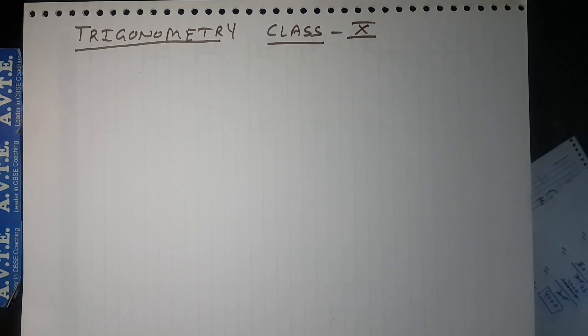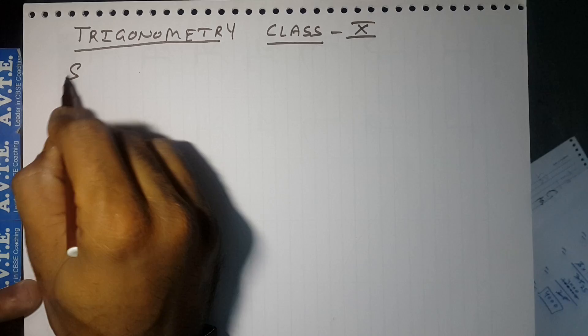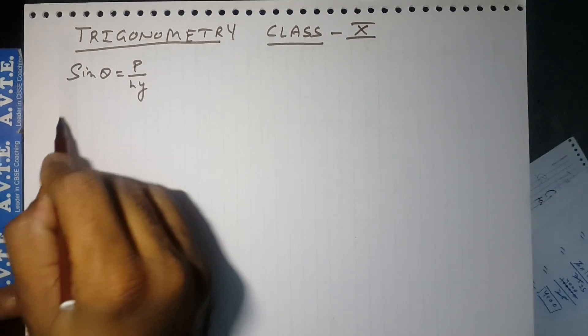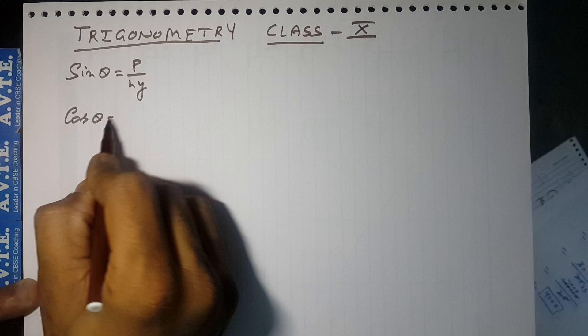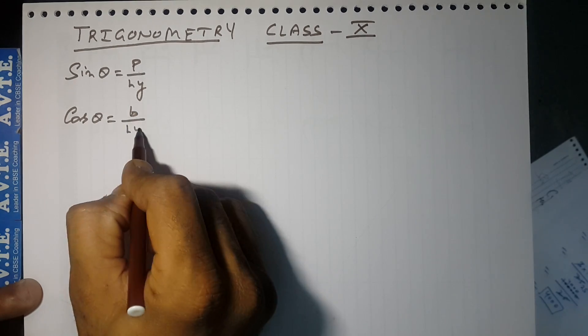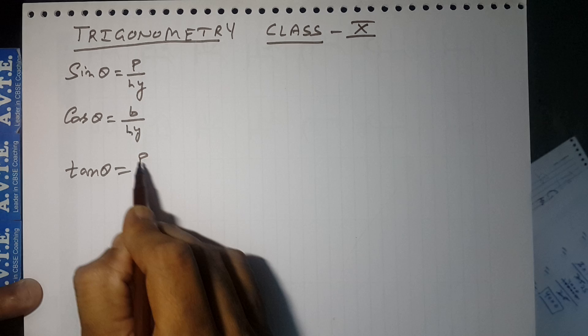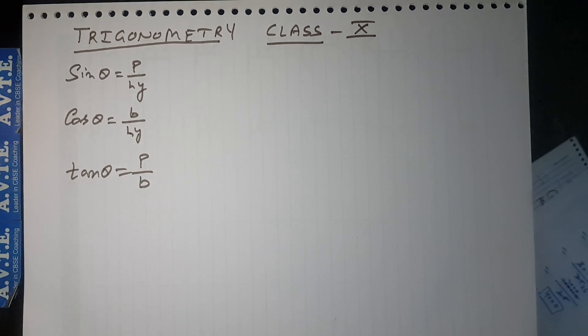Friends, today we are looking at trigonometry Class 10 basic formulas: sin θ equals perpendicular upon hypotenuse, cos θ is base upon hypotenuse, and tan θ is perpendicular upon base. Today I will tell you how to remember the formulas.